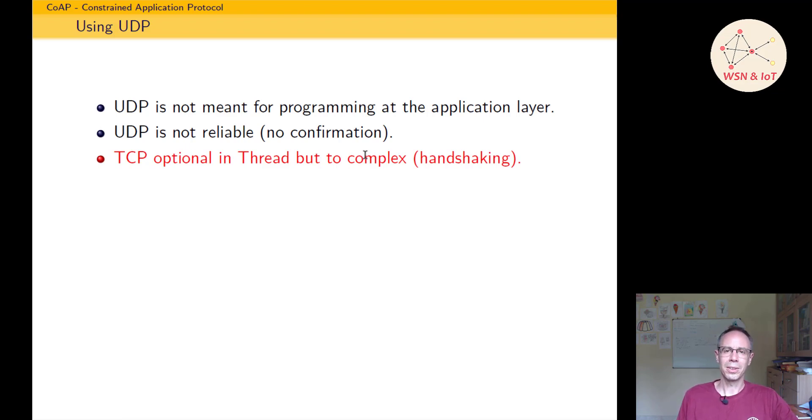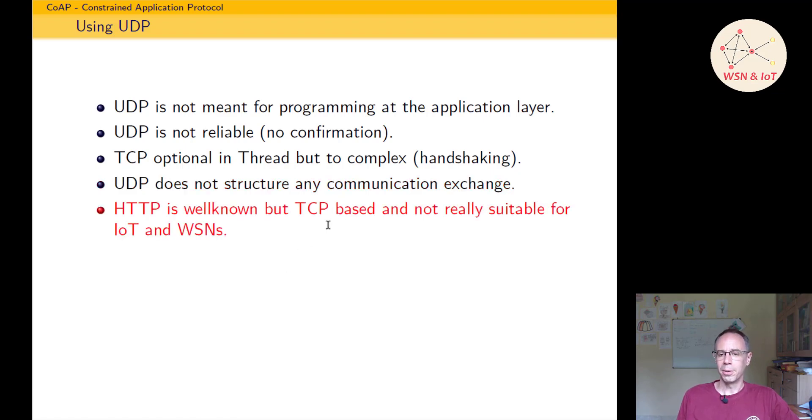Also, UDP does not structure any communication exchange. When we're sending just temperature data, it's okay—we know the structure or it's quite simple. But when you're having more data which we have to send or collect, it's not really convenient. One solution which we all know already for this is the protocol HTTP, but HTTP is TCP-based and not really suitable for IoT and WSN devices.